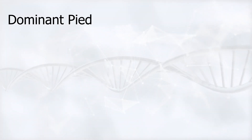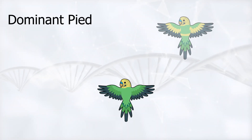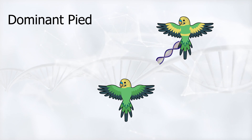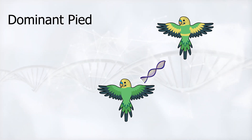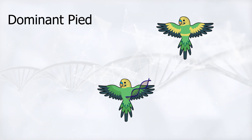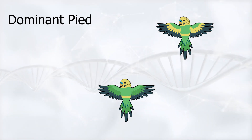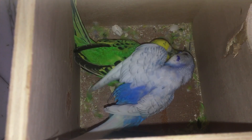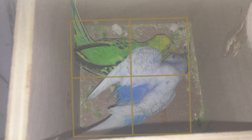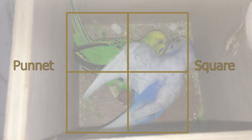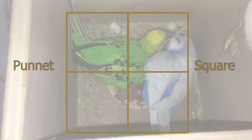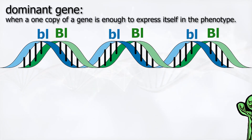The dominant Pied gene, as the name suggests, it is enough to get it from one parent for it to appear in the offspring. If you forgot what dominant means, watch my Punnett Square video where we explain the difference between recessive and dominant genes.